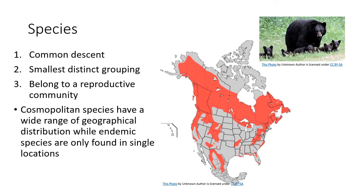Black bears are also found in Russia and Europe, so they have a cosmopolitan geographical distribution. An endemic species, by contrast, is only found in a single location — the Hawaiian Islands, for example, have many species found nowhere else, so they are endemic to there. You can also say a species is endemic to North America or endemic to a particular state.